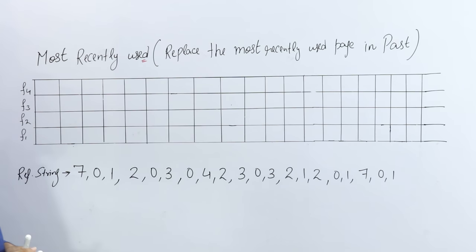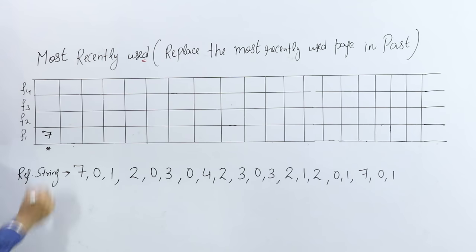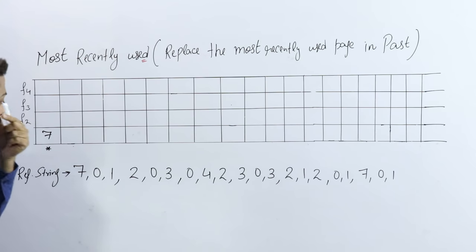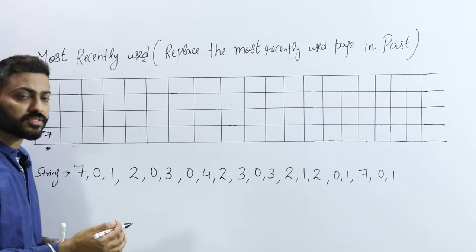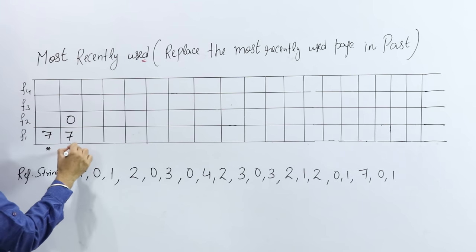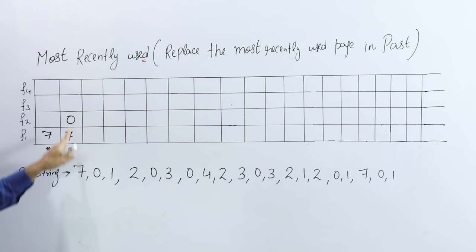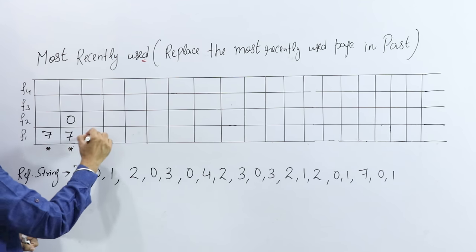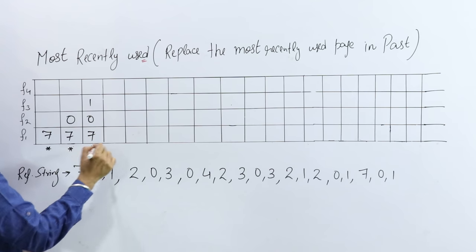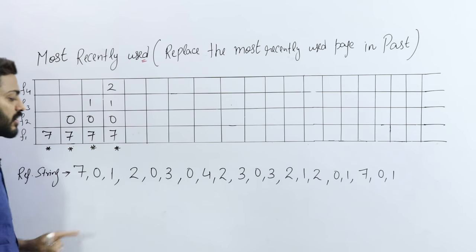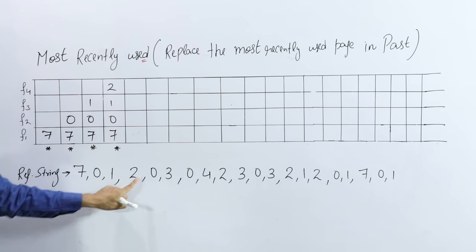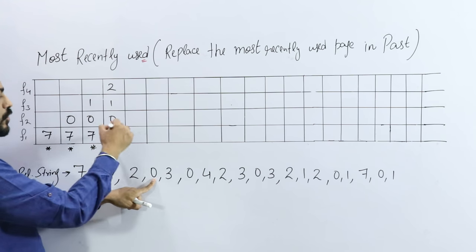The reference string is given to us and the number of frames is four. Page number 7 comes — that is called a page fault because initially all frames are empty. We called 7 from the hard disk — that is called page service. Then 0 comes — again a page fault. Then 1 comes — again a page fault. Then 2 comes — also absent, so again a page fault.